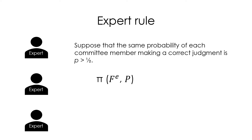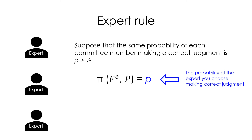Here is an example. Suppose we have a three-member committee where each member is an expert — they are competent in making a correct judgment individually, each with the same probability P greater than one-half. One rule for aggregating committee members' judgments is the expert rule: you identify one member as the expert, ask that expert whether the proposition is true or false, and go with whatever answer the expert gives. In this setting, the probability of the committee making a correct judgment under the expert rule equals the probability of the chosen expert making a correct judgment individually.